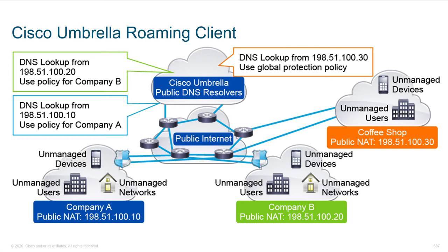Cisco Umbrella supports what we call a roaming client, and depending on how you've got it configured to operate, you're going to be able to interact with your clients in different ways. In this scenario, we've got effectively three different users: company A in the blue, company B in the green, and another user located at a coffee shop. Depending on the way that you connect to Umbrella, you're going to have different capabilities in terms of what Umbrella can do for you.